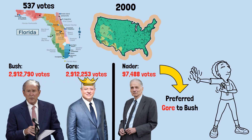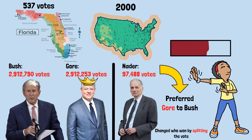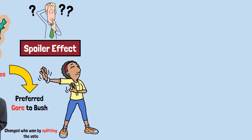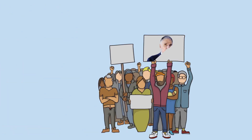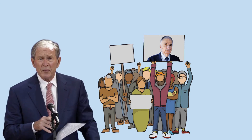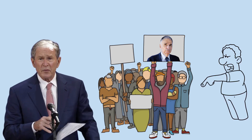So Nader, who had no chance of winning, changed who won by splitting the vote. This is called the spoiler effect. Is this fair? Nader had every right to run, and his voters had every right to vote for him. But their sincere votes for their preferred candidate resulted in electing the candidate they liked least. The voting system punished them for voting honestly.